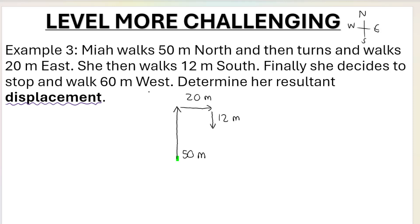Finally, she decides to stop and walk 60 meters west — basically to the left. Take note that this is where she finishes. So overall, how did she walk from her starting position to her end position? If you were to draw a head-to-tail diagram of the entire situation, this would be her displacement, delta x. My resultant goes from the tail of the first pointing towards the head of the last, but this looks like a mess.